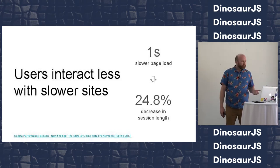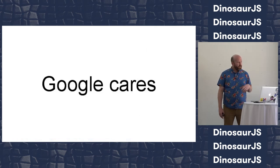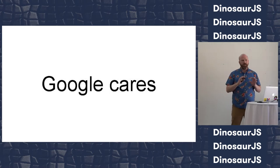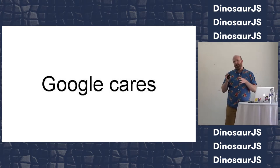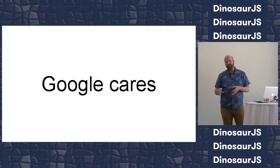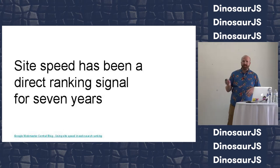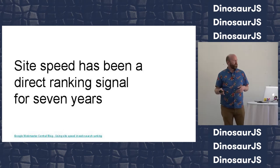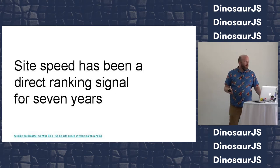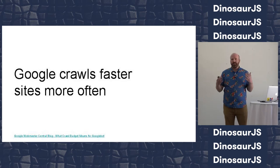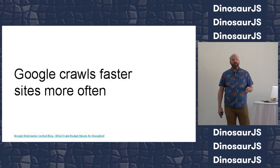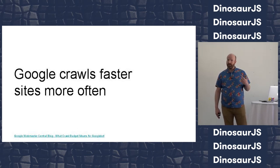The other reason is that Google cares. Some of you may be aware that Google recently pivoted their entire developer relations team to shaming developers of slow websites on Twitter. But this is actually something they've cared about for a long time — SiteSpeed was first publicly announced as a legitimate ranking signal seven years ago in 2010. Something they announced recently is that Googlebot will actually crawl your site more often if your site is faster.